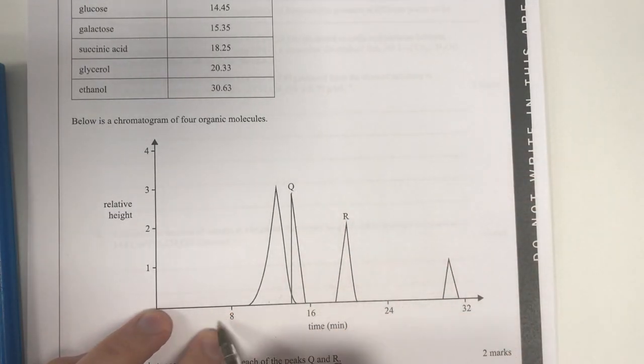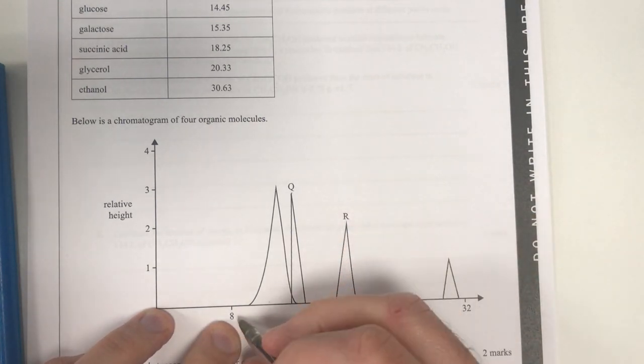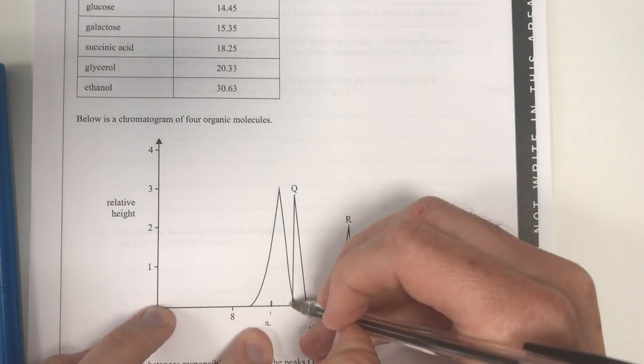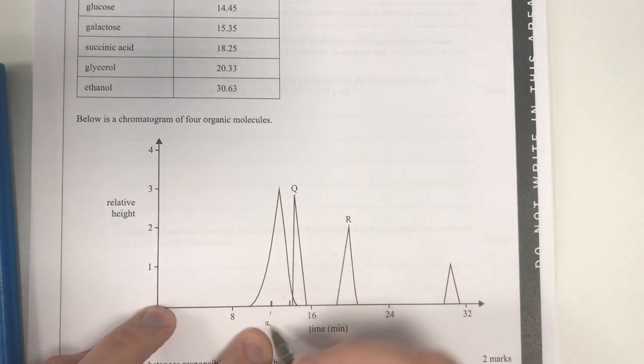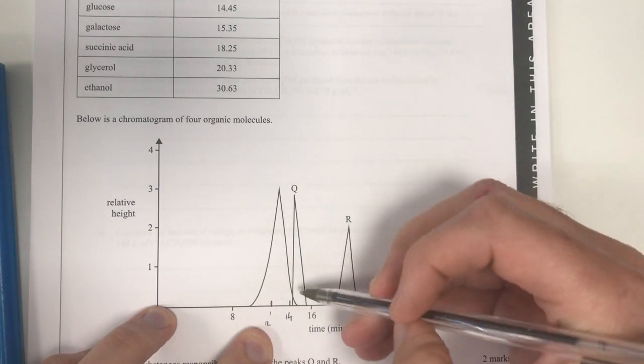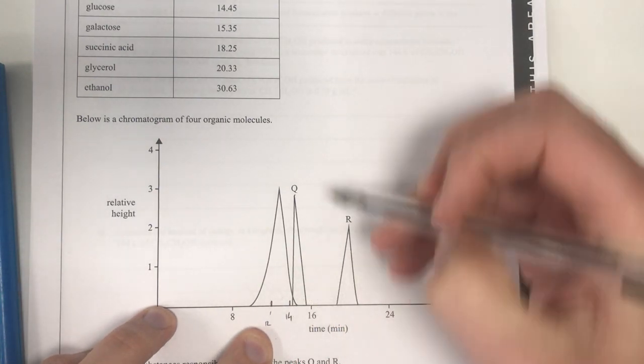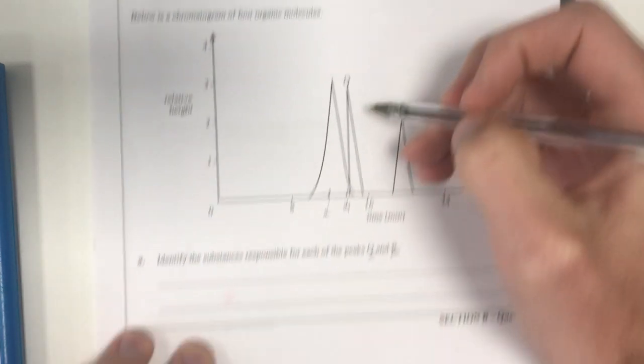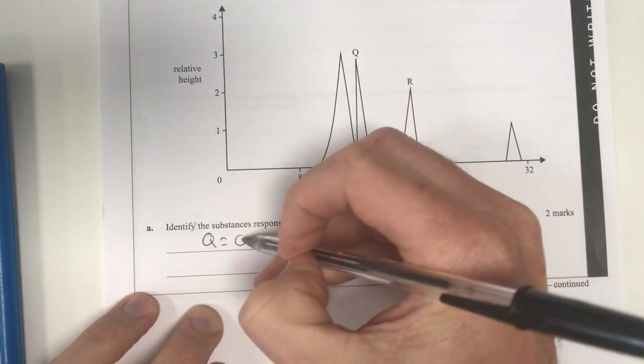So Q's here. Let's have a look at it. This is 18. Massive scale here, which is really frustrating. Halfway between these two is about here, so that's going to be about 12. Halfway between these two here is about here, and that's going to be 14. So it's just above 14. What's just above 14 here? It looks like this one is glucose. So Q equals glucose.